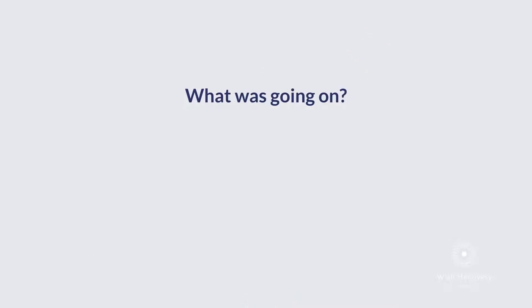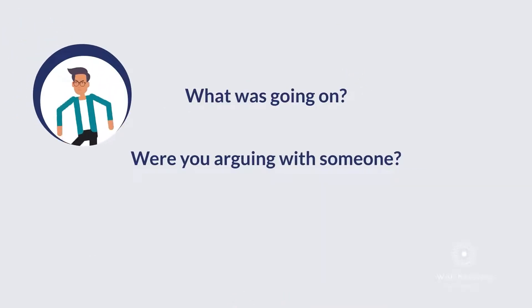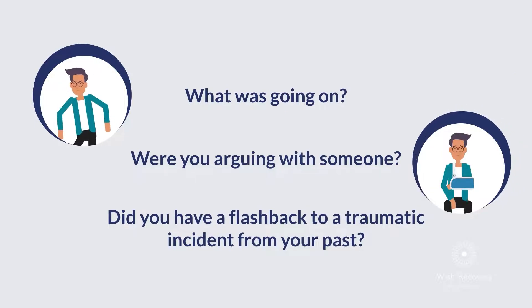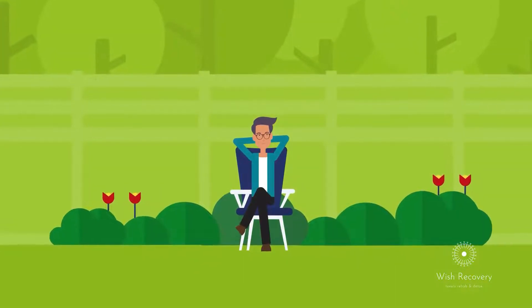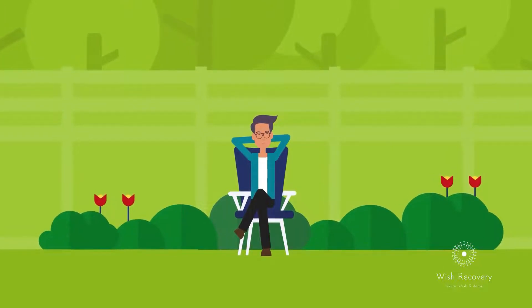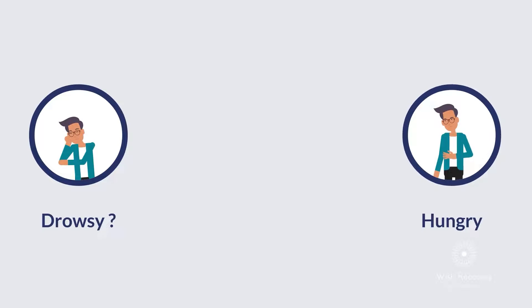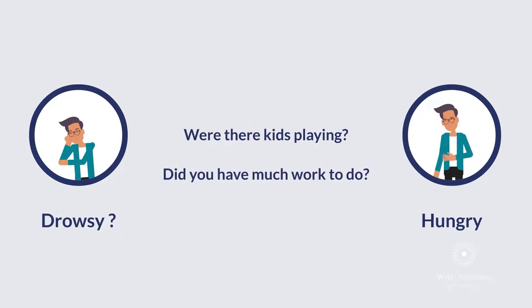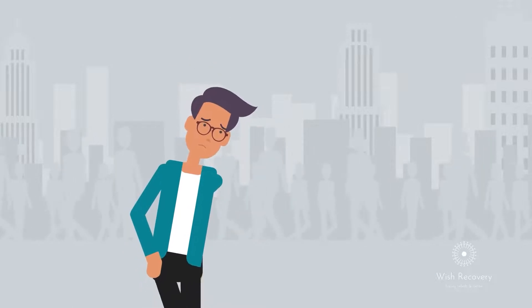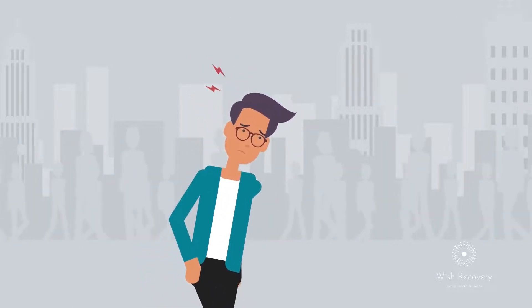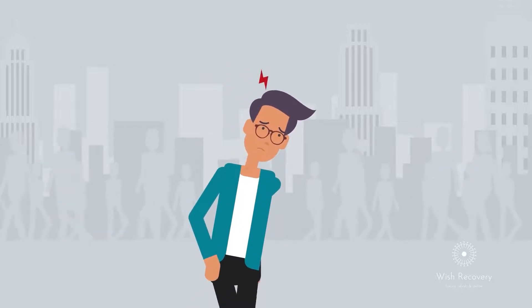Consider what occurred just before the impulse first entered your head. What was going on? Were you arguing with someone? Did you have a flashback to a traumatic incident from your past? Then take a moment to reflect on the factors that made you and your environment vulnerable. Were you feeling drowsy? Hungry? Were there kids playing? Did you have much work to do? Consider an alternative to the trigger response of drinking or taking drugs once you've listed all the precise actions and circumstances that led to the behavior.